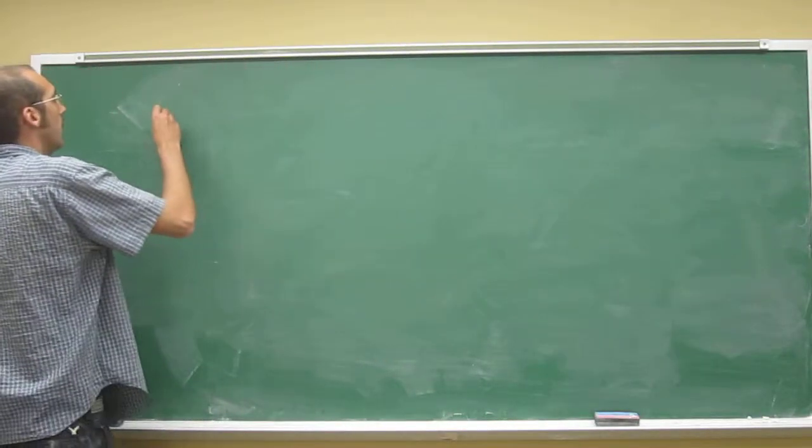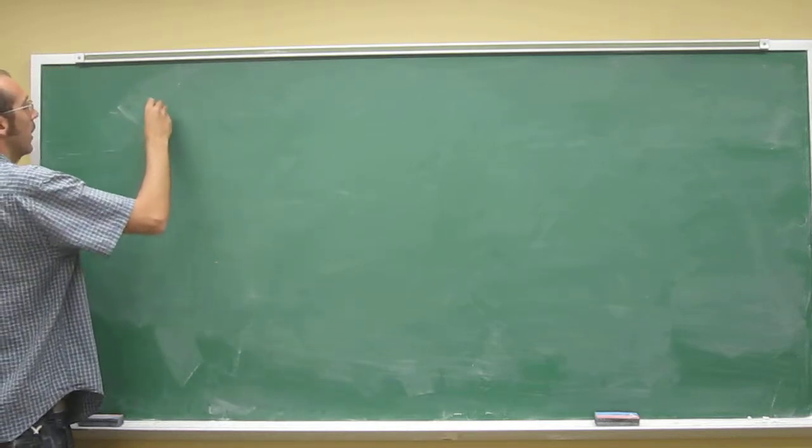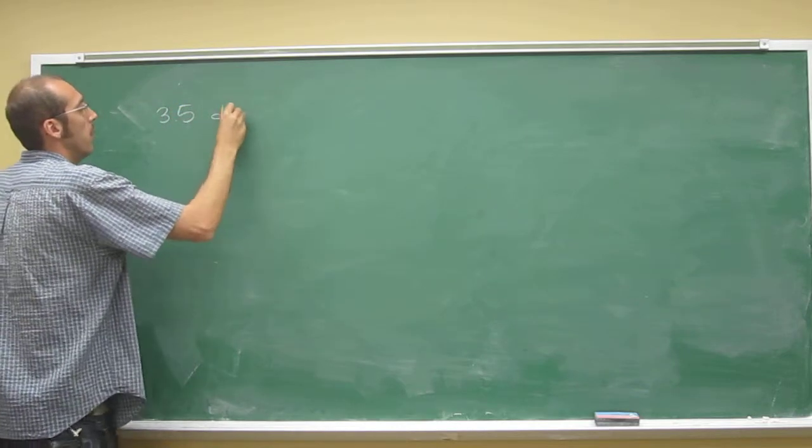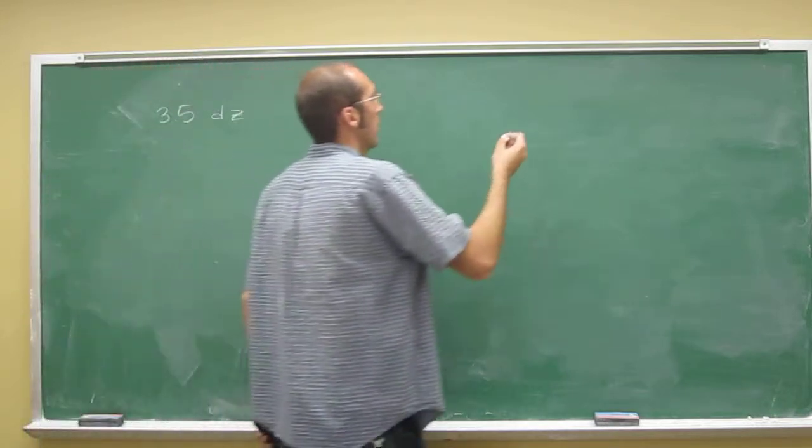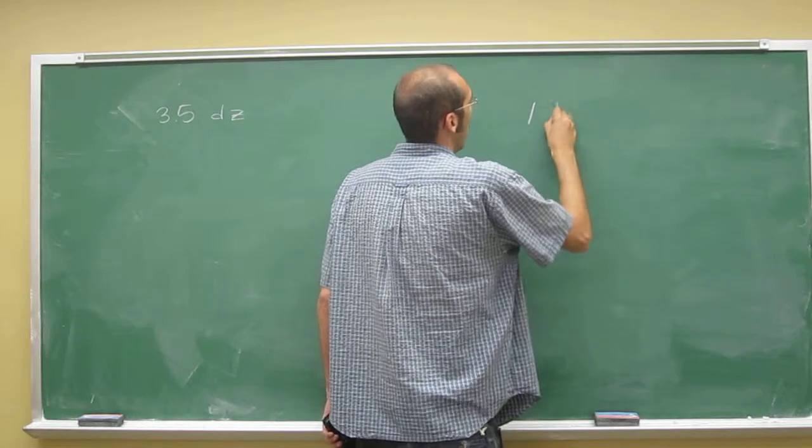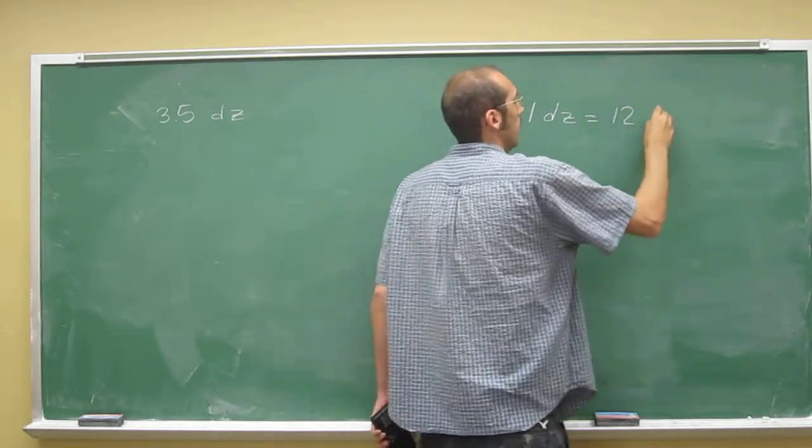So we've got, you want to write down what the problem tells you first. So how many dozen we've got, we've got 3.5 dozen. And we know our conversion factor, right, is 1 dozen equals 12 doughnuts.